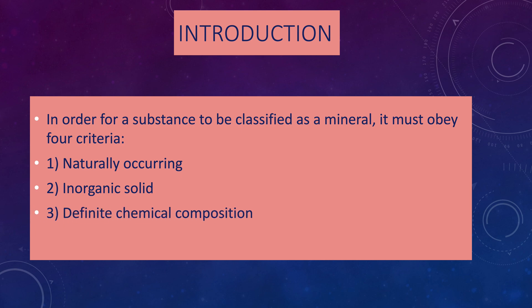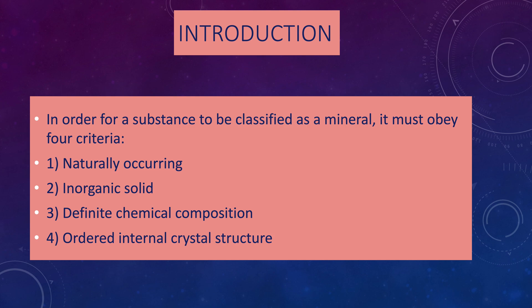Number three, minerals have a definite chemical composition or a definite chemical formula — for example, NaCl or HCl. Those are mineral formulas. And number four is that minerals have an ordered internal crystal structure, meaning all the atoms are arranged perfectly into some form of lattice. So if the substance is a solid, it will have an ordered internal crystal structure.